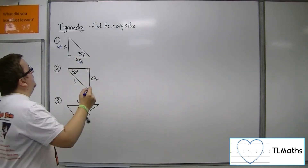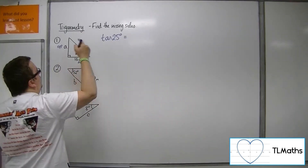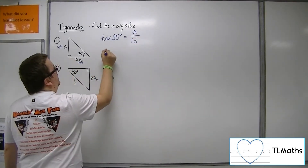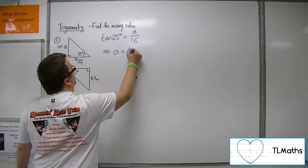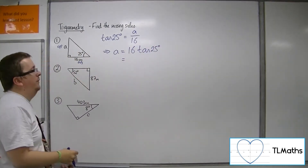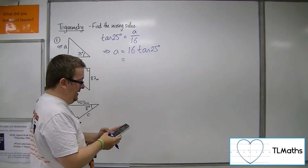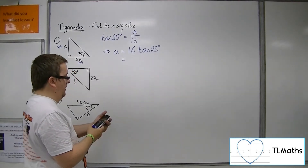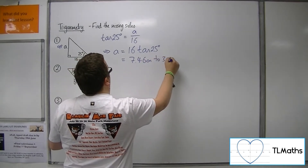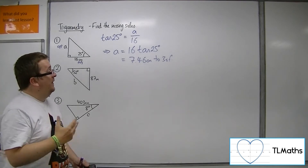So we can say that tan of 25 must be equal to the opposite side, A, over the adjacent side, 16. So you can multiply up to get 16 tan of 25 degrees to be the side of A. That gives us 16 times tan of 25, which is 7.46 centimetres to three significant figures.